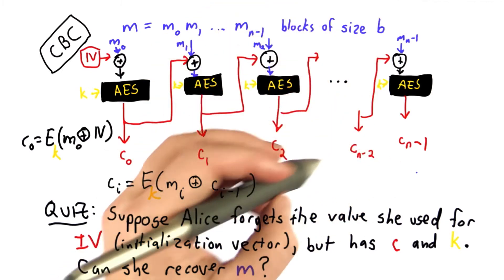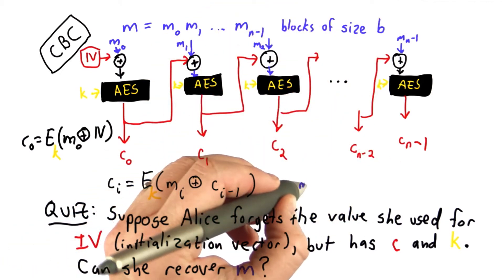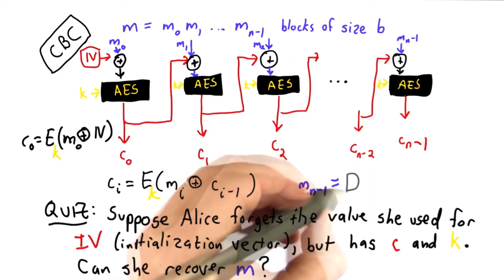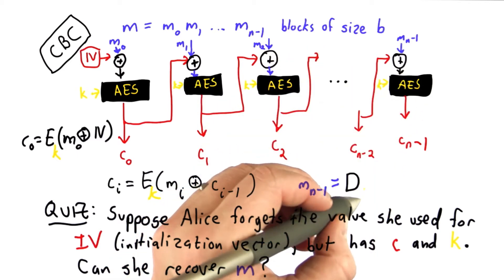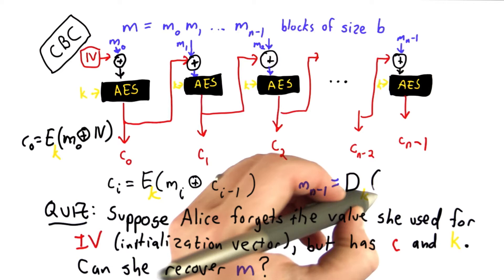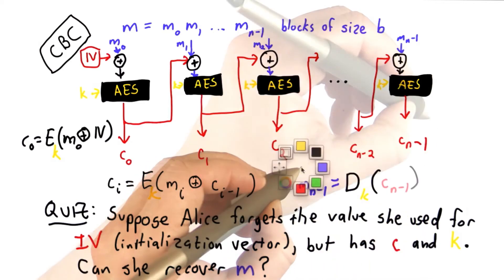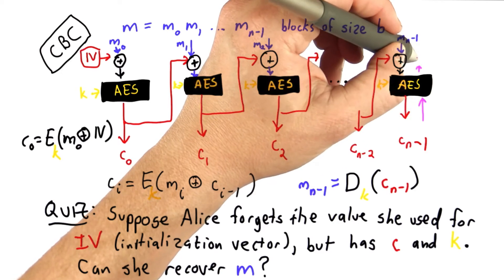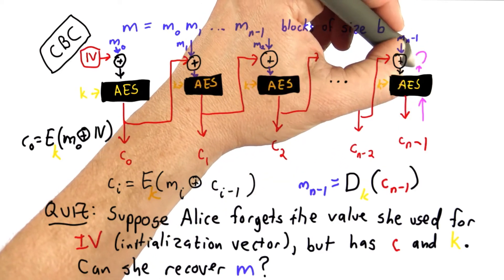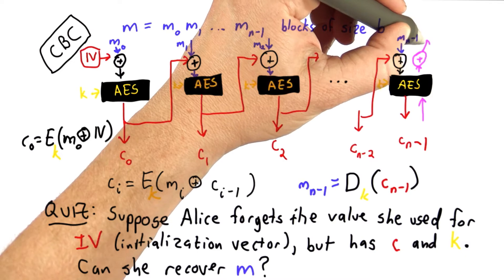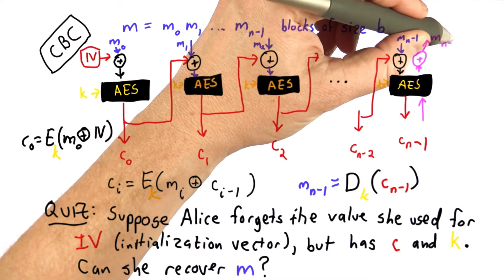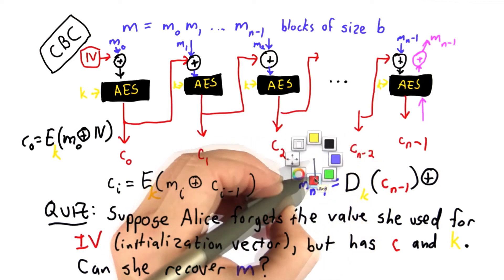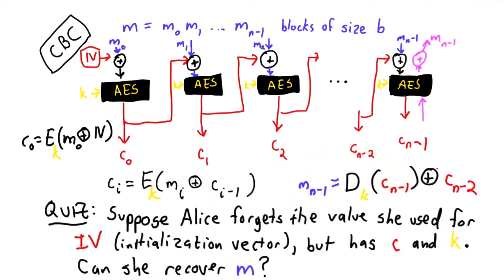We can look at this backwards. In order to get the last message block, what we need to do is decrypt using key k, and the input to decrypt is this last ciphertext block. We're going backwards, we're decrypting. We don't have the message block yet. To get the message block, we need to do the XOR to get message block n-1. That means we're XORing that with the ciphertext value of the previous block, which we already have.